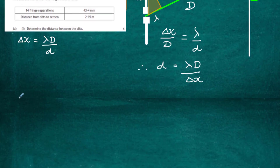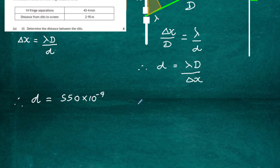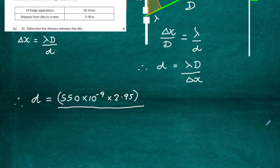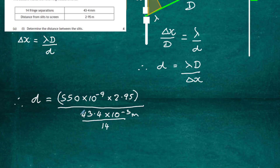Let's plug in the values. Therefore d equals lambda — the wavelength, which is 550 nanometers, i.e. 550 times 10 to the minus 9 meters — multiplied by capital D, which is 2.95 meters, divided by delta x. Delta x is calculated by measuring 14 fringe separations getting 43.4 millimeters, then dividing by 14 to get one gap. So 43.4 millimeters, which is 43.4 times 10 to the minus 3 meters, divided by 14.